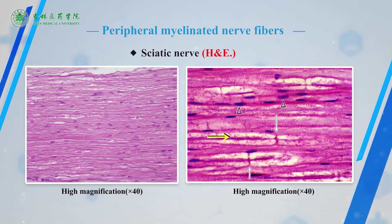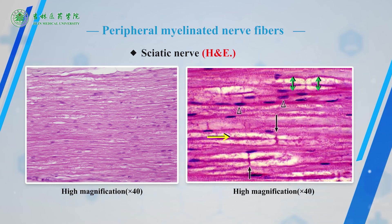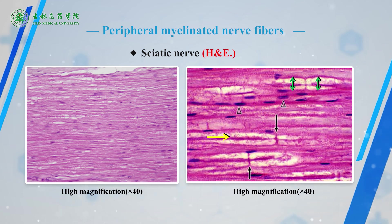The black arrow indicates that the axon is surrounded by a myelin sheath and Schwann cells, shown by the green arrow. The lipid component of the myelin is dissolved by alcohol during tissue preparation, so only a red network structure remains. At the node of Ranvier, there is a narrow region without myelin. On the margin of the myelin, the oval nuclei of Schwann cells can be seen. Pay attention to distinguish them from the nuclei of fibroblasts between the nerve fibers.